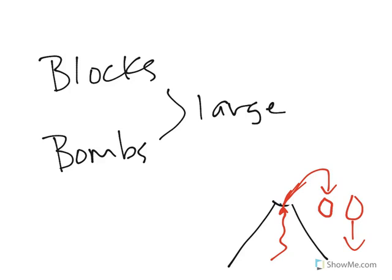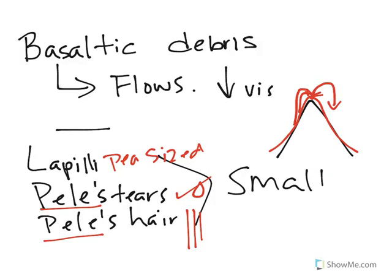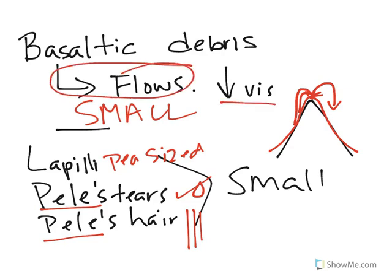So again, remember that those pyroclastic basaltic debris are all going to be relatively small in size because, remember, basalt flows due to its low viscosity.